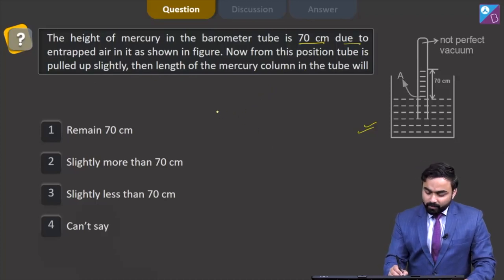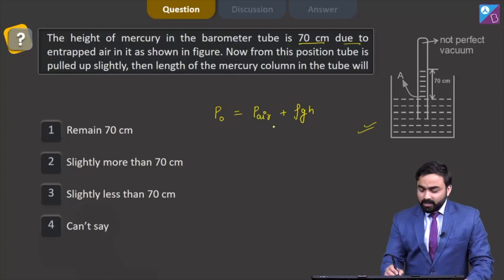Now students, at point A, P₀ = P_air + ρgh. P_air is the pressure due to air entrapped in this particular barometer tube, and P₀ is the atmospheric pressure.